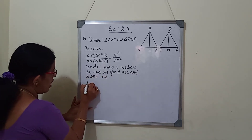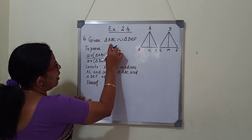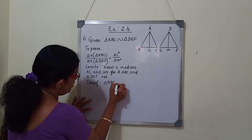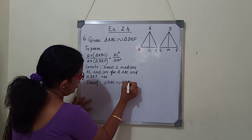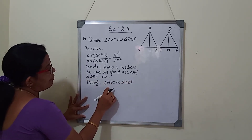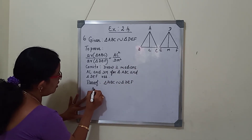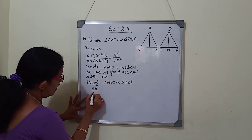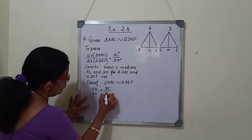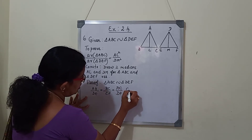Now we will start the proof. It is already given that both triangles are similar, so we write triangle ABC is similar to triangle DEF. This is given. Since the triangles are similar, we can write the sides ratio: AB by DE is equal to BC by EF is equal to AC by DF. This is by CPST.